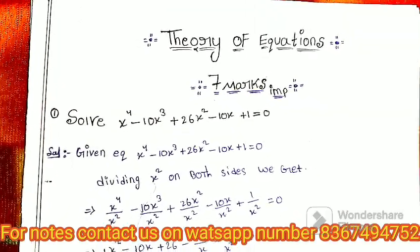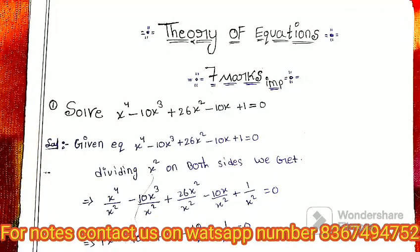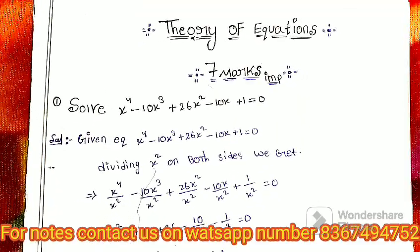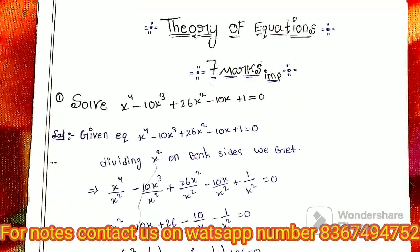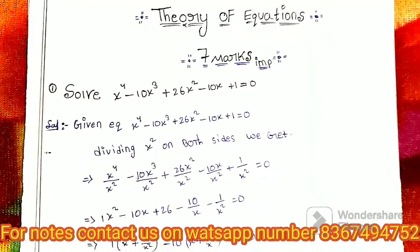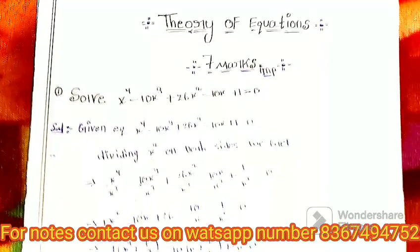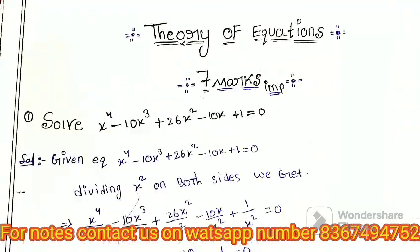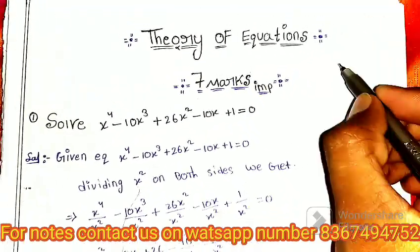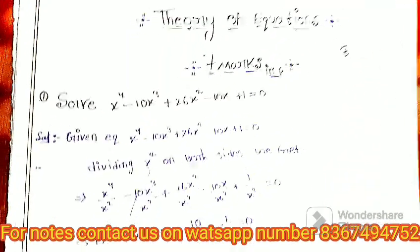In this video on intermediate second year maths 2, theory of equations chapter 7 marks important questions. This chapter has one type of question and it is very easy.